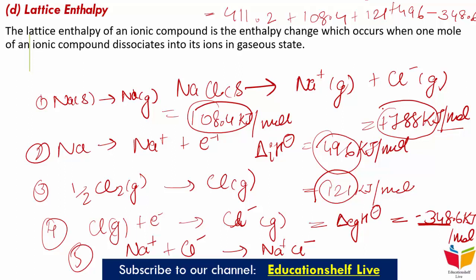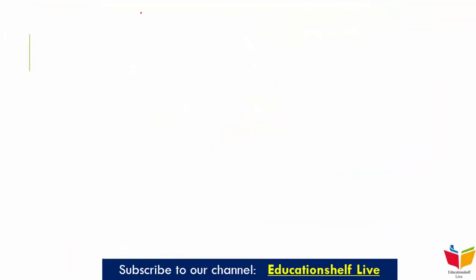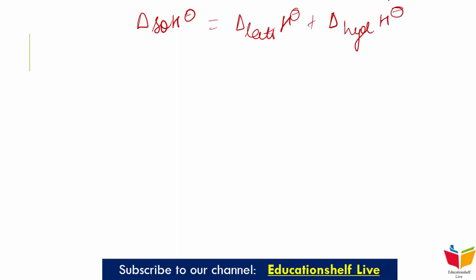Since ΔNg = 2, the internal energy is smaller than enthalpy by 2RT, giving +783 kJ per mol. Using lattice enthalpy, we can find the enthalpy of solution: ΔsolutionH = ΔlatticeH + ΔhydrationH. For one mole of NaCl: lattice enthalpy = +788 kJ/mol and hydration enthalpy = −784 kJ/mol, so solution enthalpy = +4 kJ per mol — meaning very little heat change occurs when NaCl dissolves.